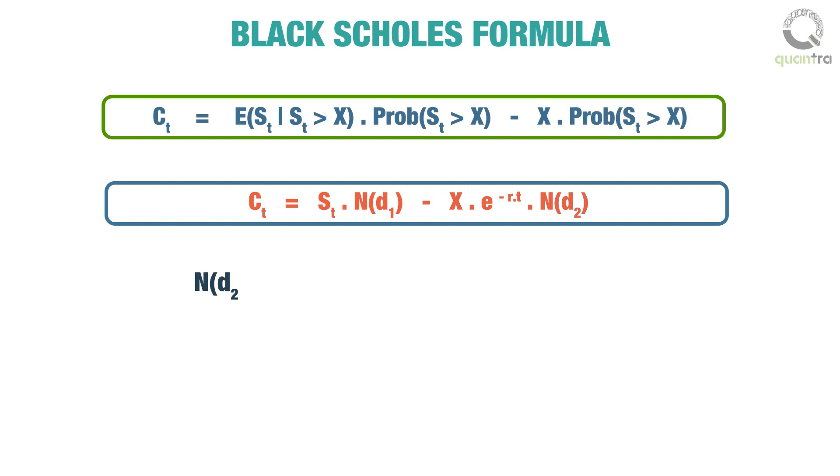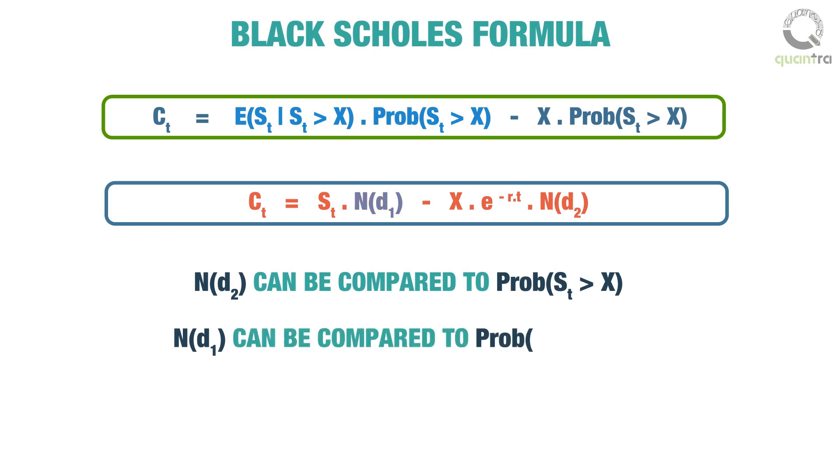It can be seen that the term N(d2) can be compared to the probability of St being greater than X. There will be a slight difference in the N(d1) term, which in addition to the probability of St being greater than X will also have certain components from the expected value of St given that option expires in the money from our intuitive formula.